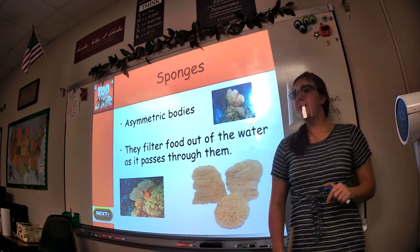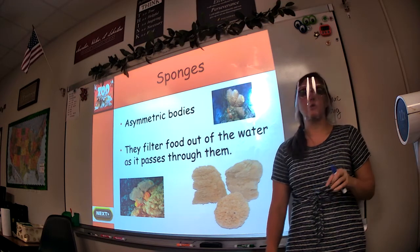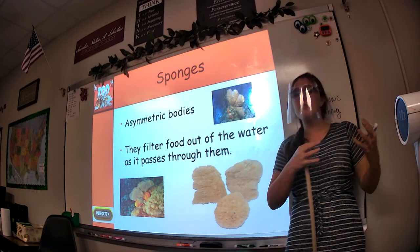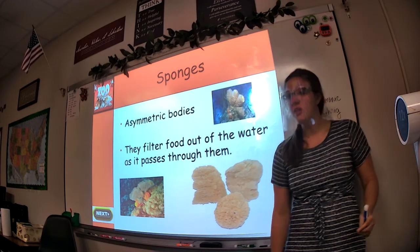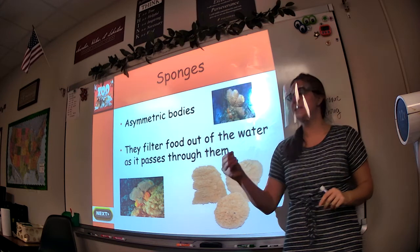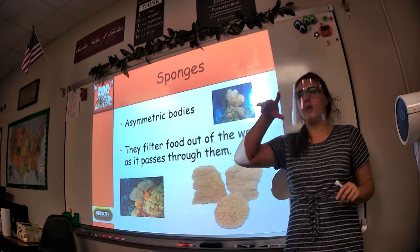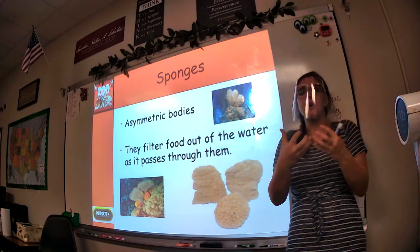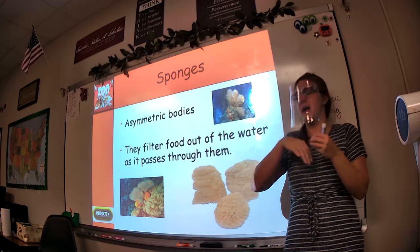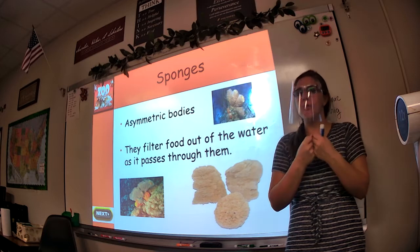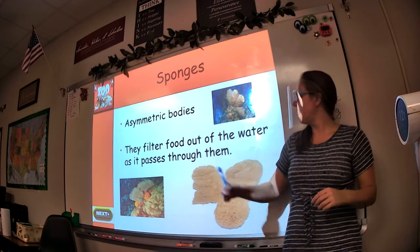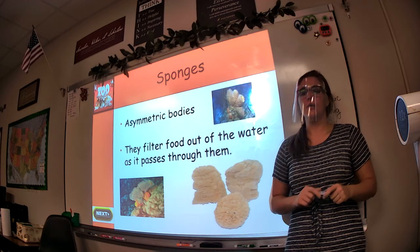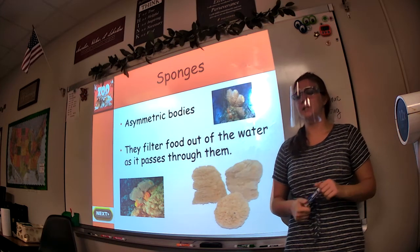Sponges are very primitive animals, which means they're not very advanced. Water in the ocean flows through the holes of their bodies all the time, and that's actually a good thing because the water contains microorganisms — microscopic bacteria floating in the water — and that's what the sponge eats. As water filters through the sponge, it works like a strainer, trapping organisms and allowing water to pass through. So they filter food out of the water as it passes through them.